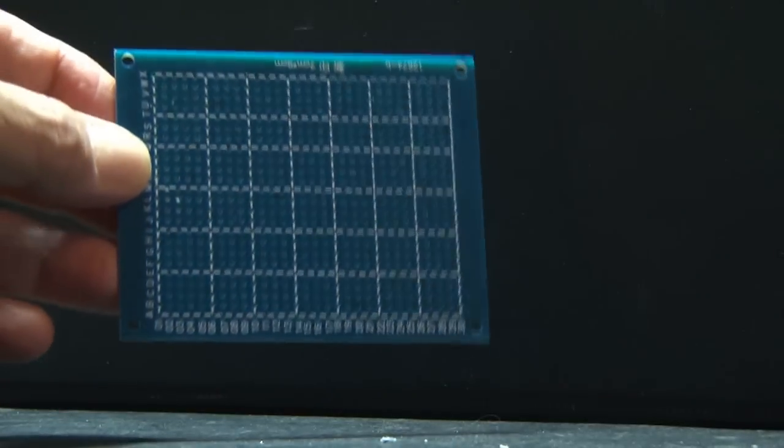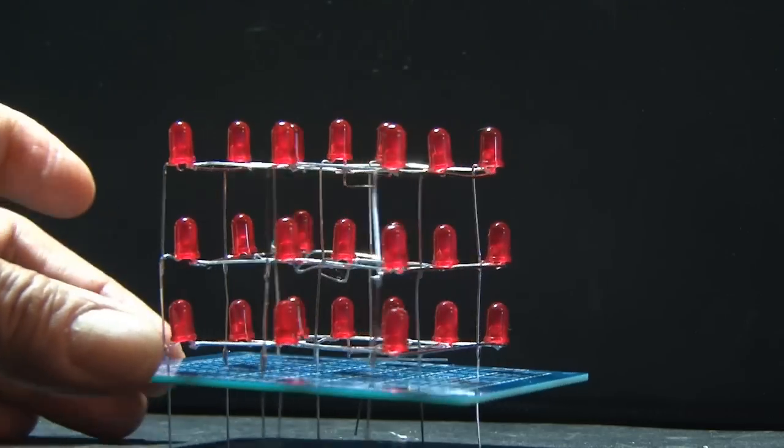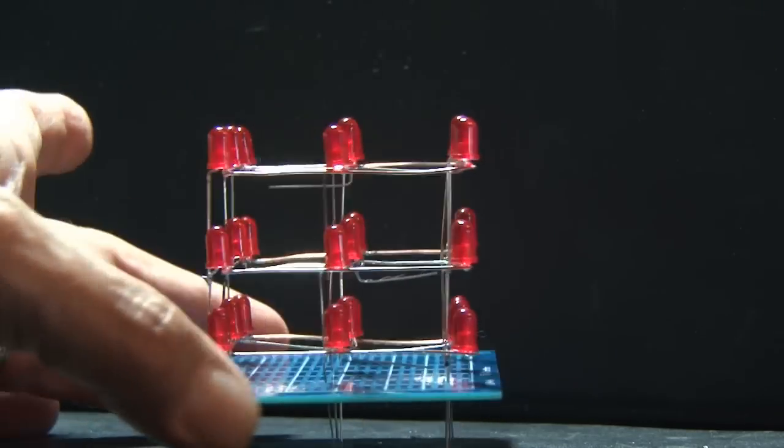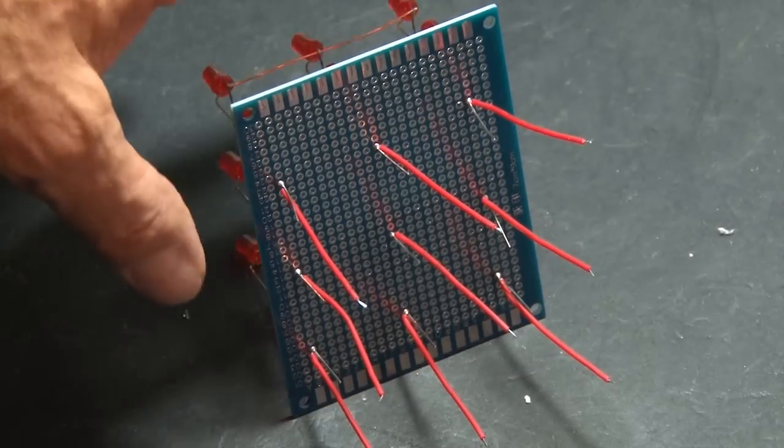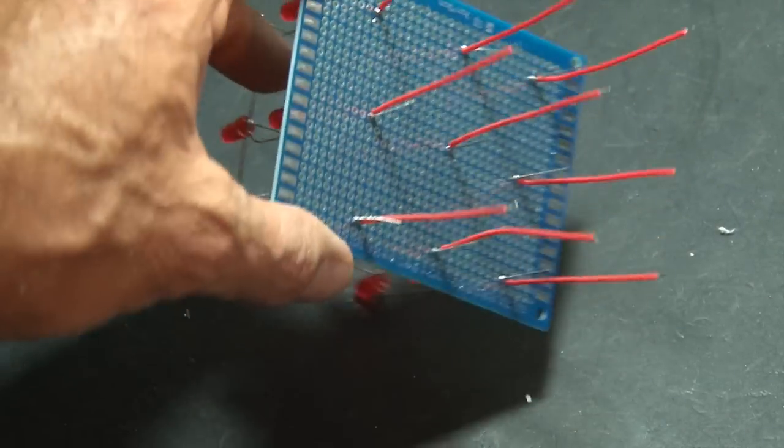Now, to mount our DIY LED Cube, we'll use a PCB board. The negative LED leads will be inserted into the holes in the PCB board. Now, it's time to wire it up, so we'll have nine wires coming off those negative LED leads.